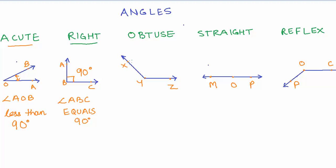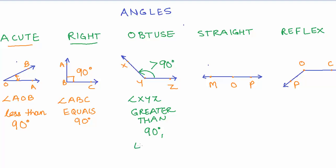The third type of angle is the obtuse angle. Angle XYZ is greater than 90 degrees, so that is known as an obtuse angle. It is important to understand that an obtuse angle must be greater than 90 degrees and less than 180 degrees.